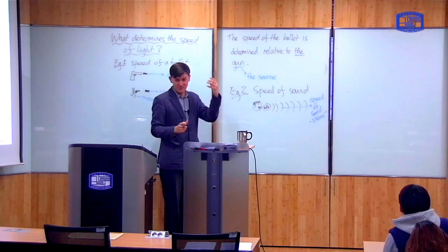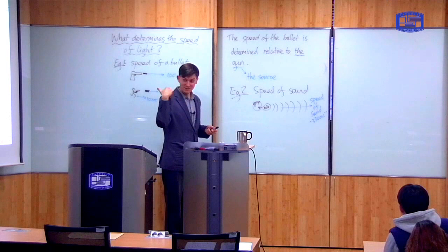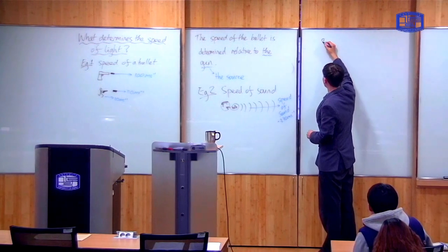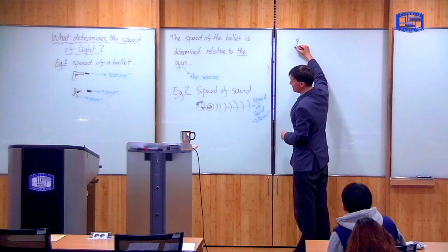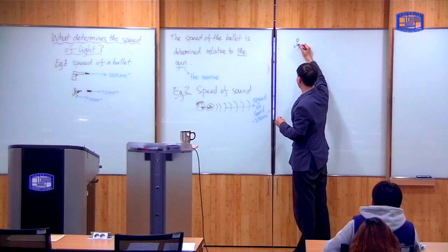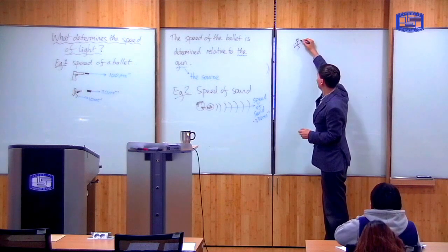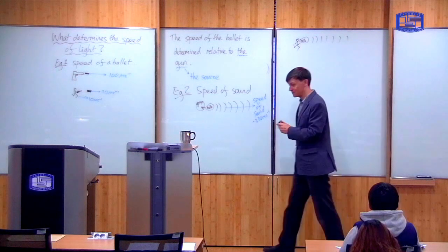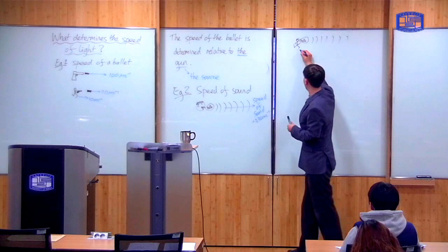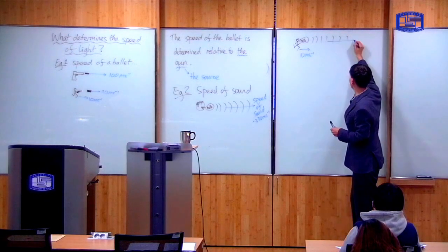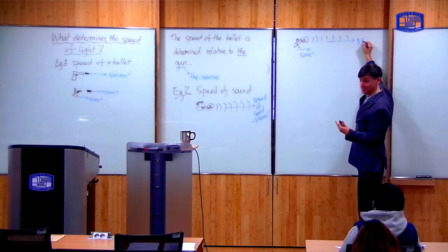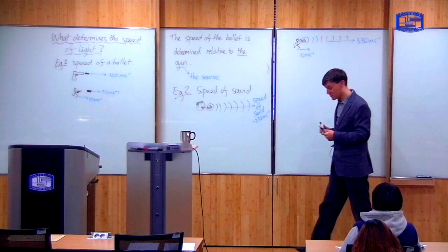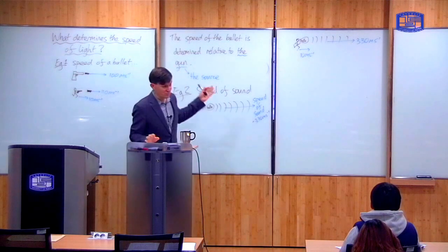So again we can do the same kind of experiment. I run or I drive a car and I shout and see does that affect the speed of the sound. So I do the same kind of experiment. Here's me running. And again, I shout hello. And again, the sound comes out. Now this example is different. In this example, even if I run at a speed of 10 meters per second, the speed of sound is not changed. The speed of the sound coming out of my mouth is not affected by my speed.